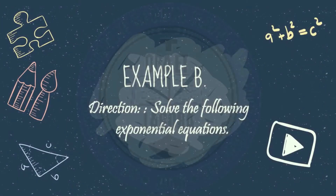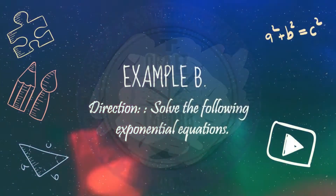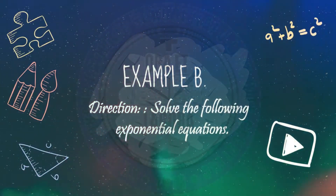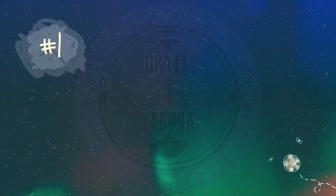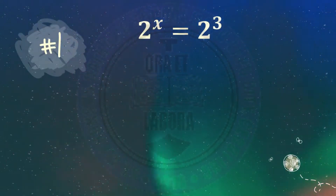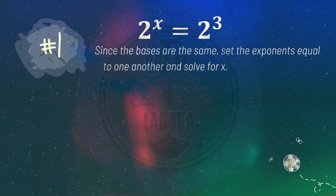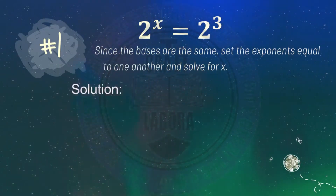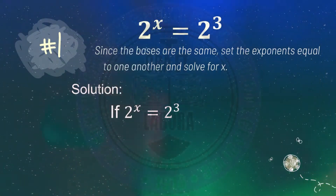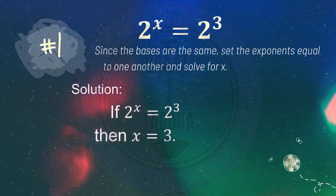In our second set of examples, we are going to solve the following exponential equations. Number 1: 2 raised to x equals 2 cubed. Since the bases are the same, set the exponents equal to one another and solve for x. If 2 raised to x equals 2 cubed, then x equals 3.